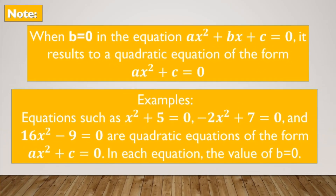Please take note: when b is equal to 0 in the equation ax squared plus bx plus c is equal to 0, it results in a quadratic equation of the form ax squared plus c is equal to 0. Examples of such equations include x squared plus 5 is equal to 0, negative 2x squared plus 7 is equal to 0, and 16x squared minus 9 is equal to 0. In each equation, the value of b is equal to 0.